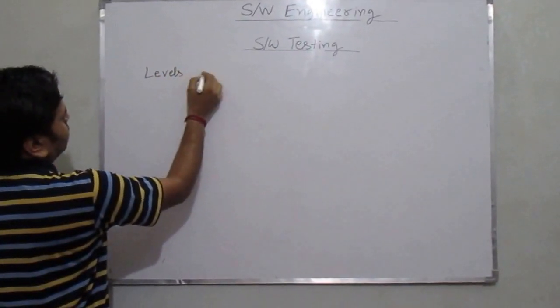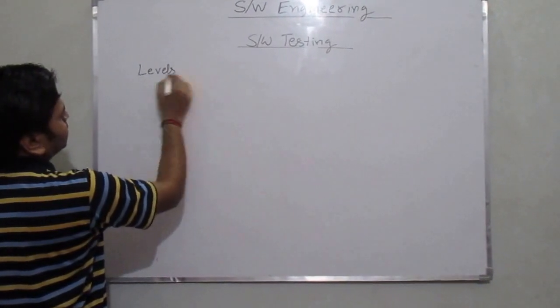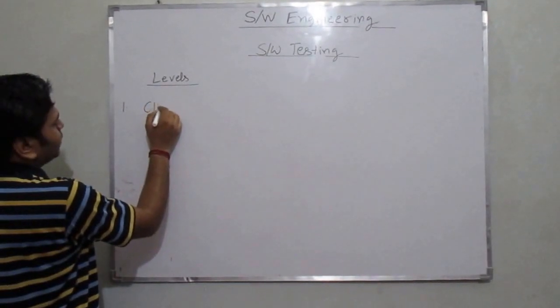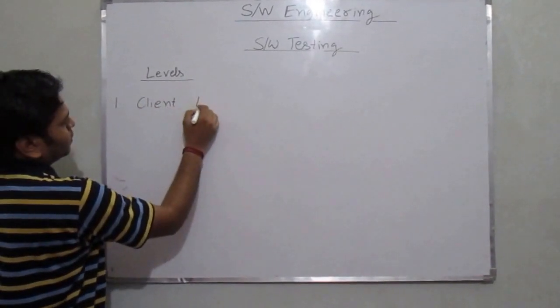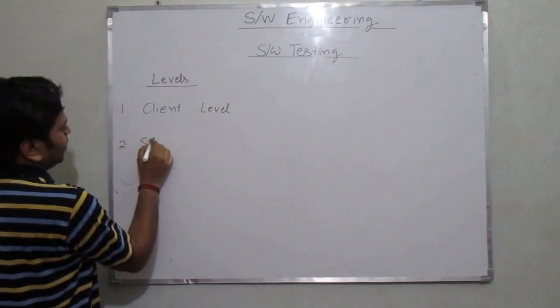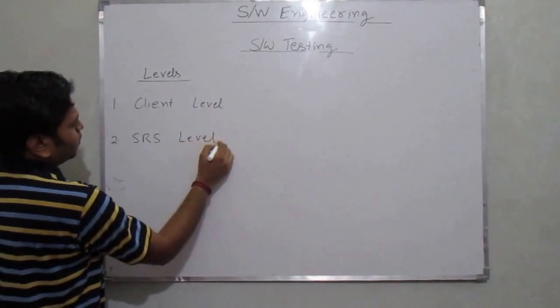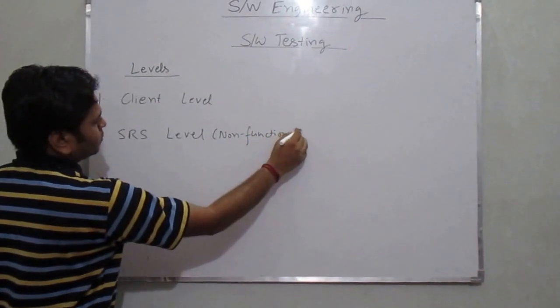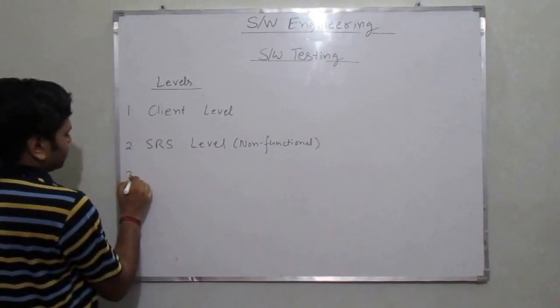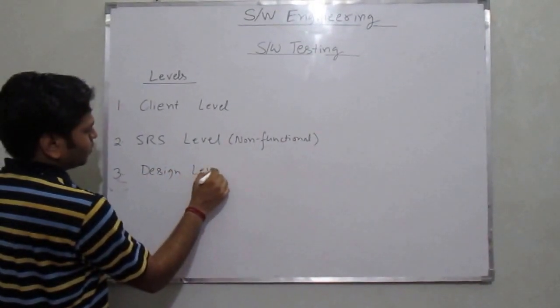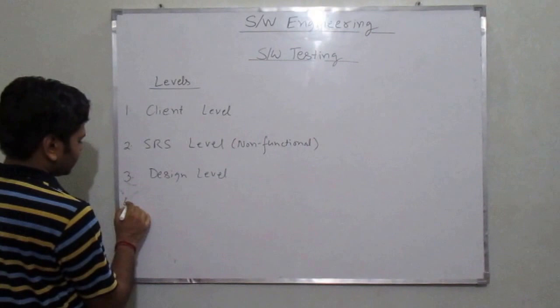There are various levels of software testing. The first level is basically involved with the client level. The second is the SRS level, which is basically the non-functional level. Then there is the design level, and the last one is the coding level.